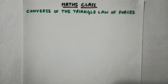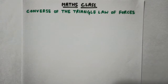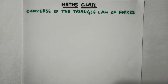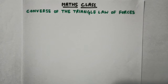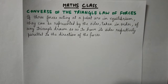Welcome everybody. Today we are going to do the converse of the triangle law of forces. In the previous video we did the proof of the triangle law of forces, which stated that if three forces acting at a point can be represented in magnitude and direction by the sides of a triangle taken in order, then those three forces are in equilibrium. Today we are going to do the converse of that law, which states that if three forces acting at a point are in equilibrium, they can be represented by the sides taken in order of any triangle drawn so as to have its sides respectively parallel to the direction of the forces.